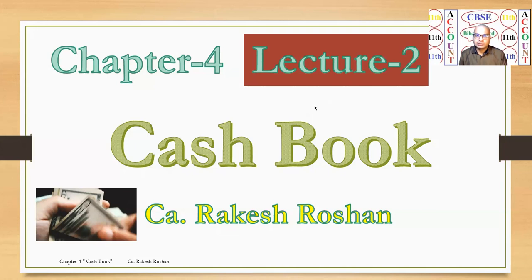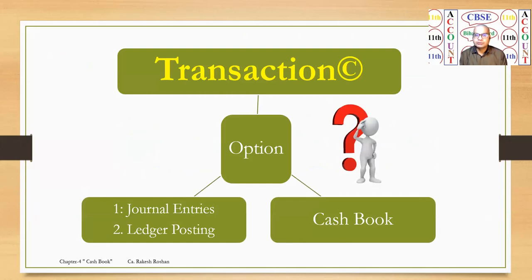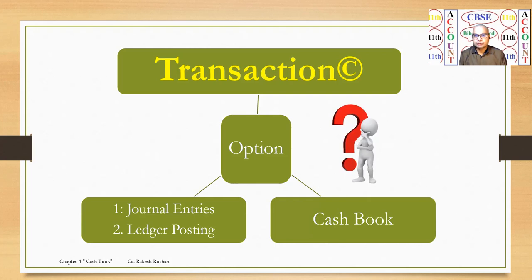In the last lecture, we understood that for any transaction, there are two options. Option one is the previous system — journal entry and then ledger posting. Option two is maintaining the cash book.